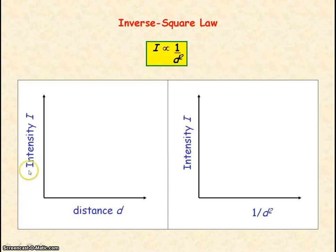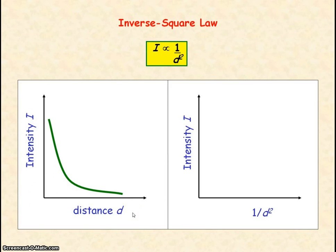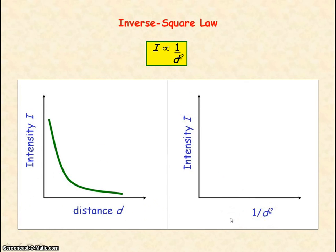If we were to plot a graph of intensity I for a point source against distance d away from the point source, we'd get a curve. But because I is proportional to 1 divided by d squared, if we plot a graph of intensity I against 1 divided by d squared, as these two are directly proportional, we'll get a straight line through the origin.